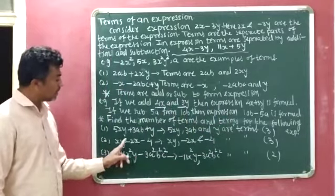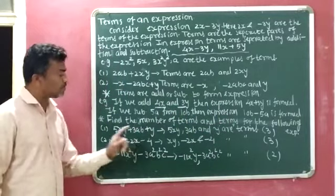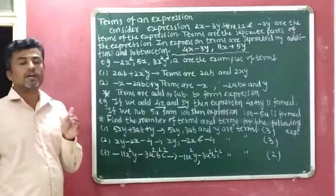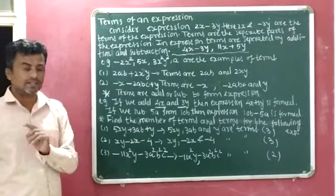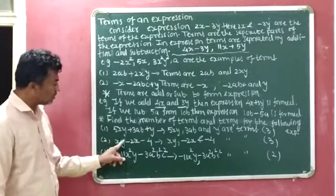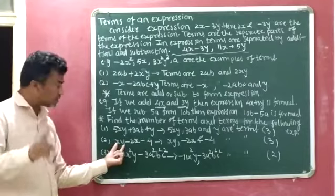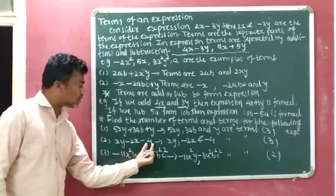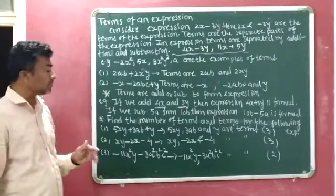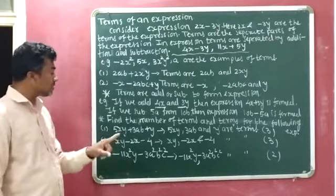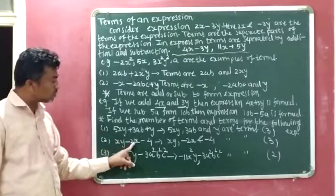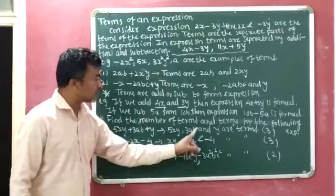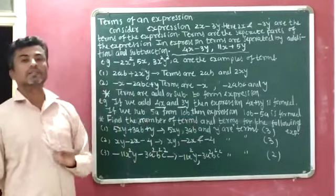Question 2: xy minus 2x minus 4. Terms are separated by addition and subtraction. xy is the first term, minus 2x is the second term, and minus 4 is the third term. Number of terms: 3. Terms are xy, minus 2x, and minus 4.